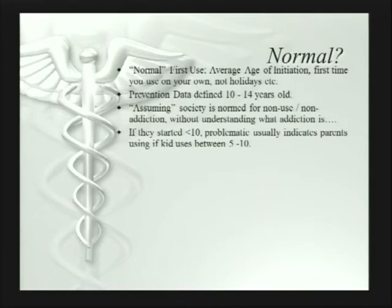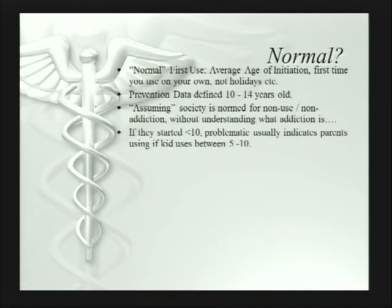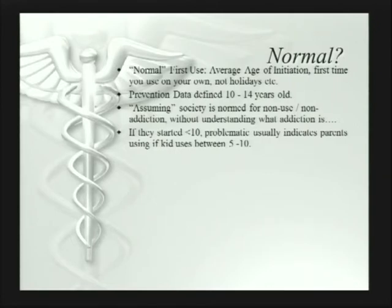Some of the patterns you want to look for: if they started before age 10, that's problematic, but it usually indicates the parents were using — especially if kids are using between ages five and ten. We're assuming normal parental controls, where at least the parents try and hide it from the kid. Sometimes the kid, because the parents are using, will have a delayed initiation age out of rebellion or opposition.